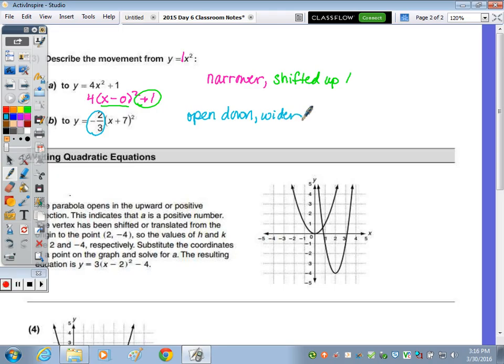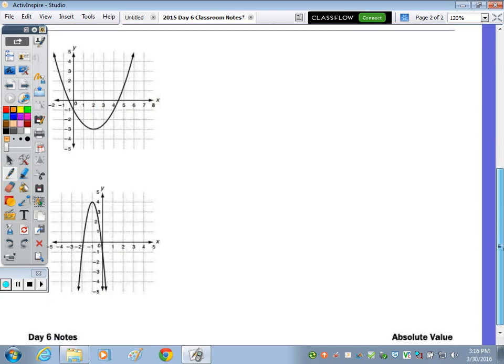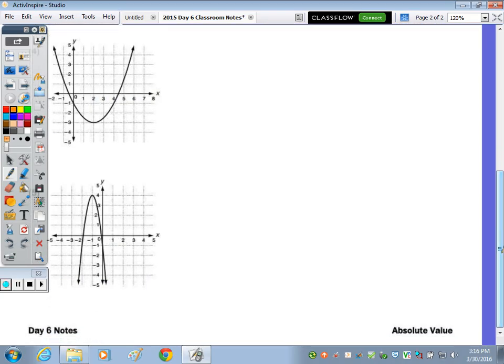So with the next one, looking out front, negative 2 thirds. The negative means it's going to open down and be wider. Within the parentheses, we have a plus 7, so that means it's going to be shifted left 7 units. And no plus or minus outside of that parentheses, so it's not moving up or down.